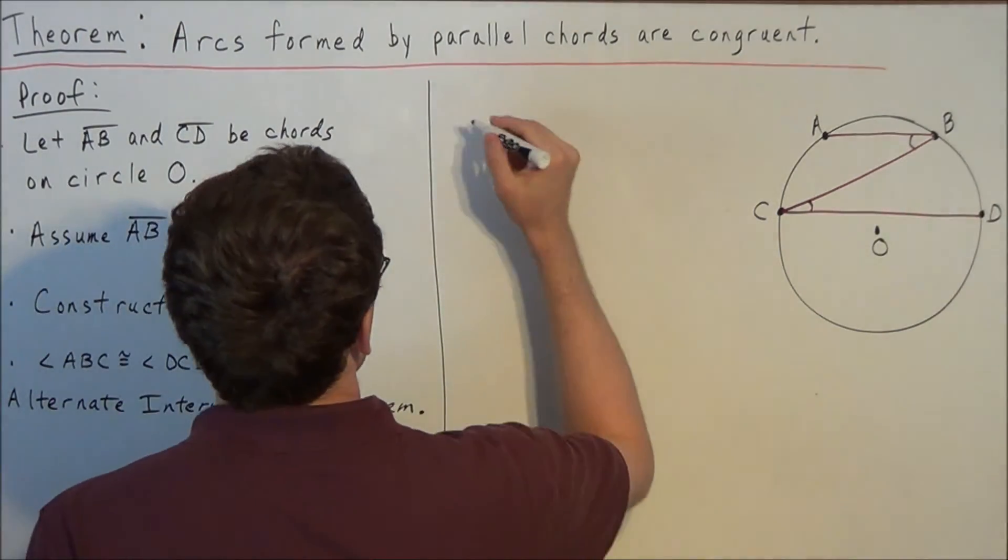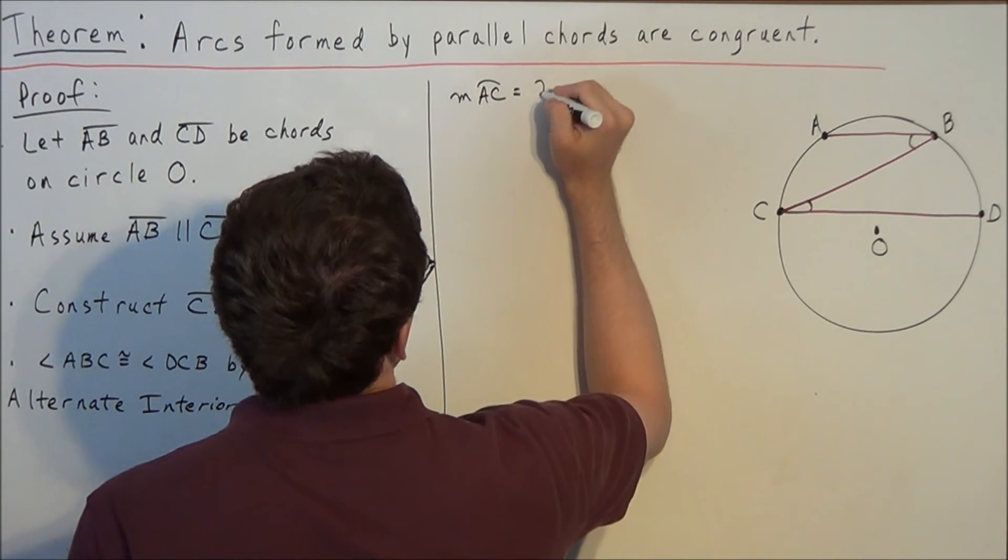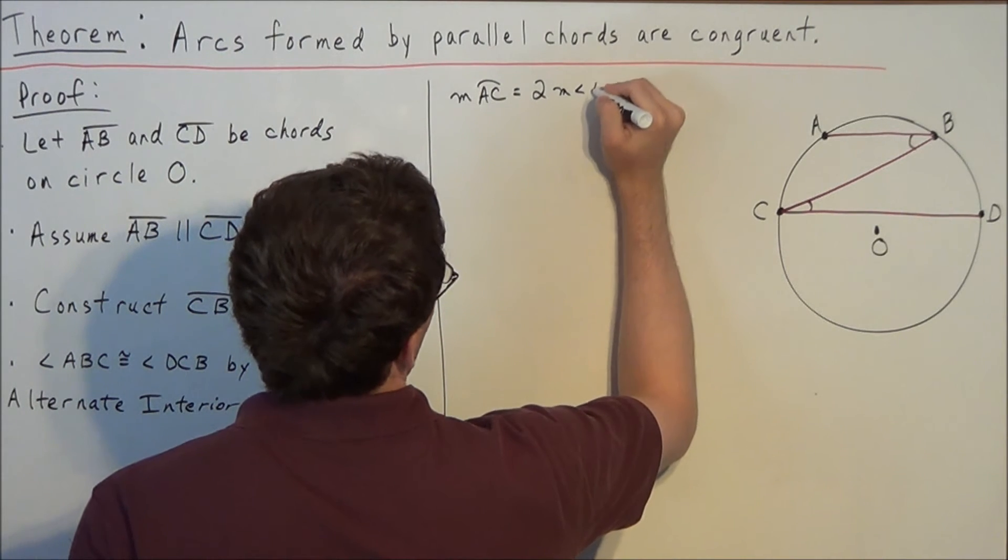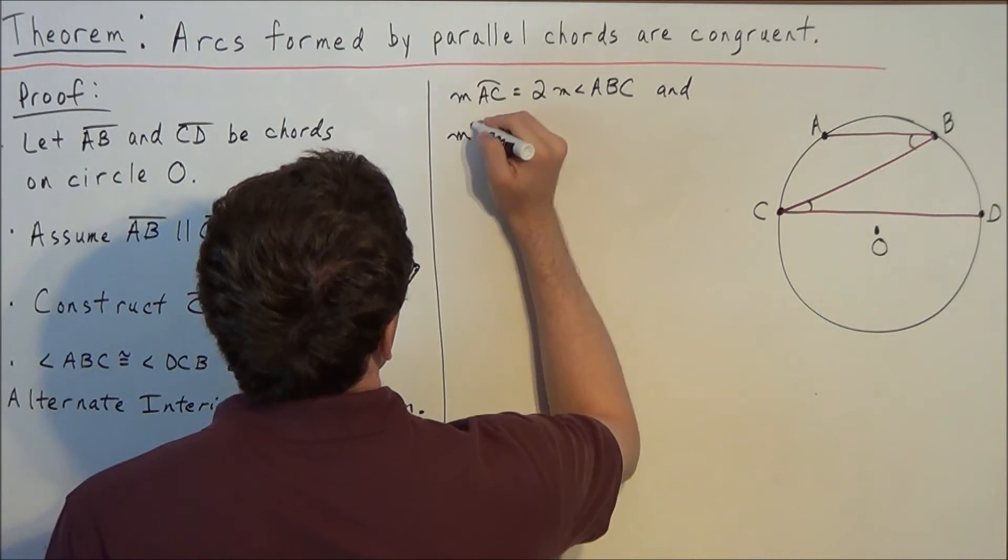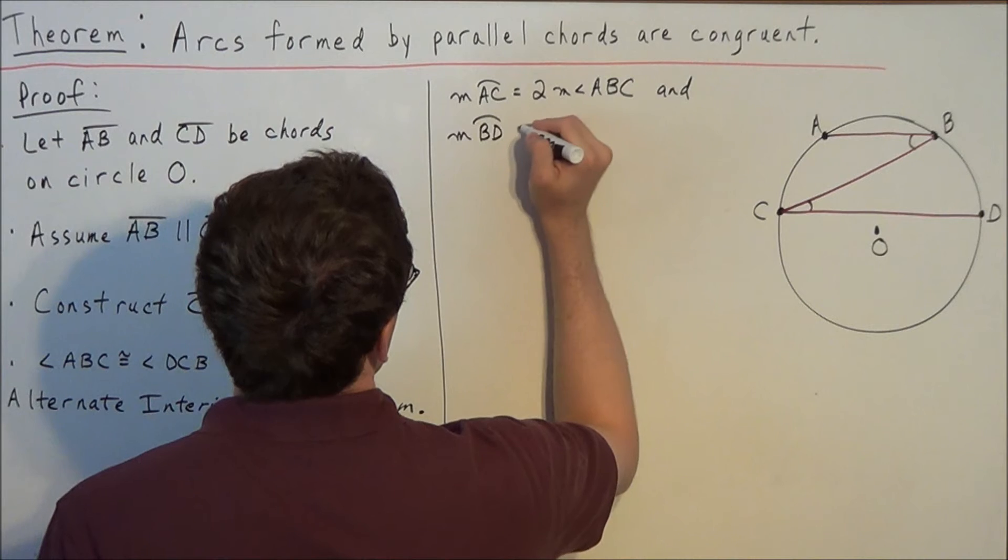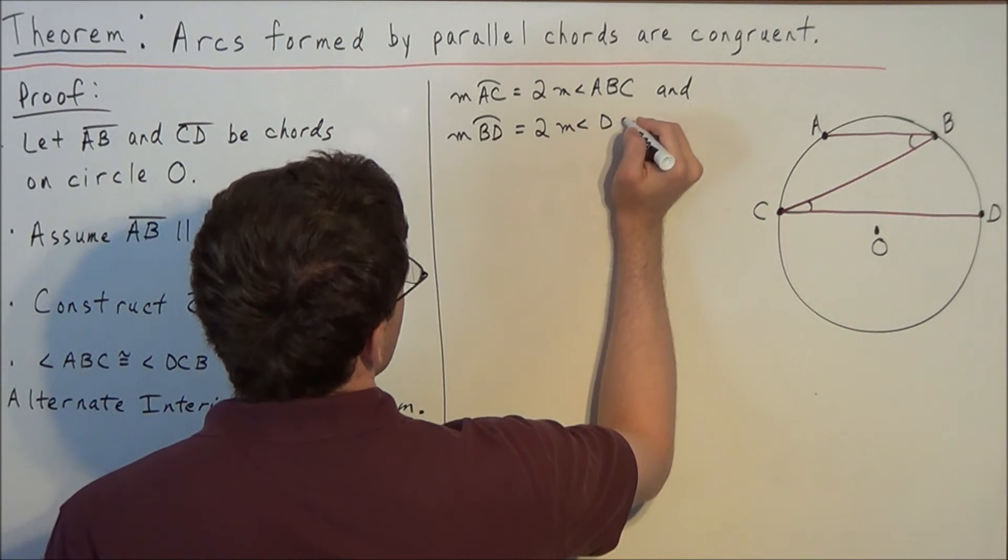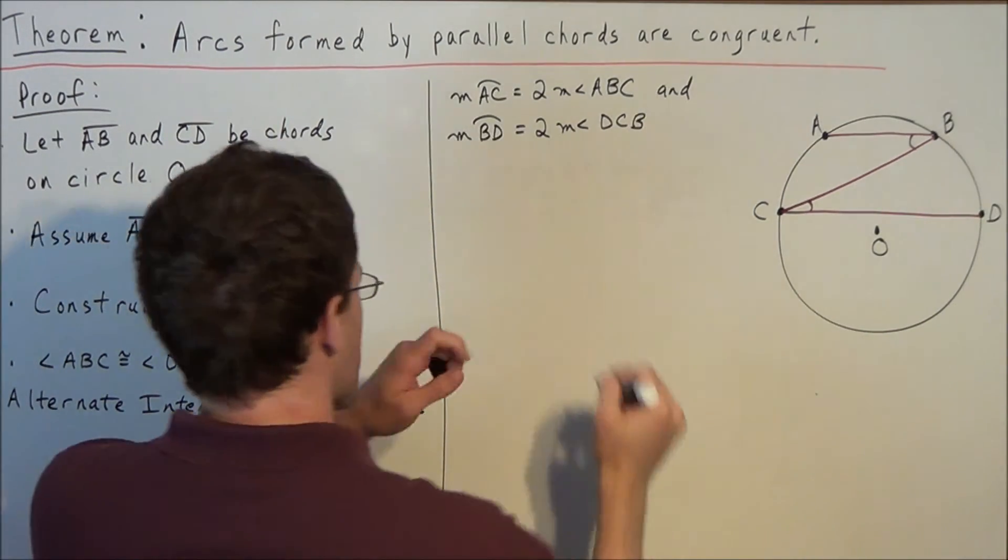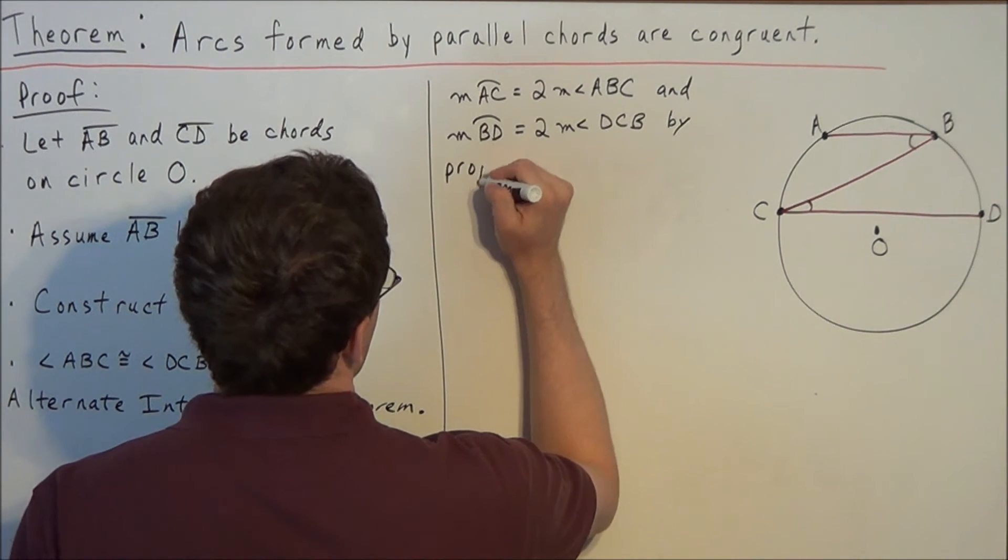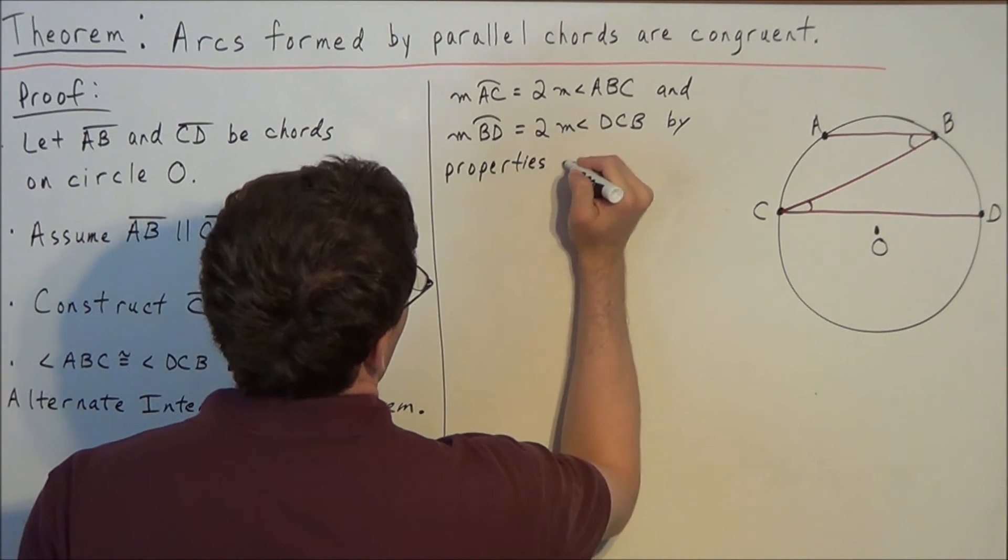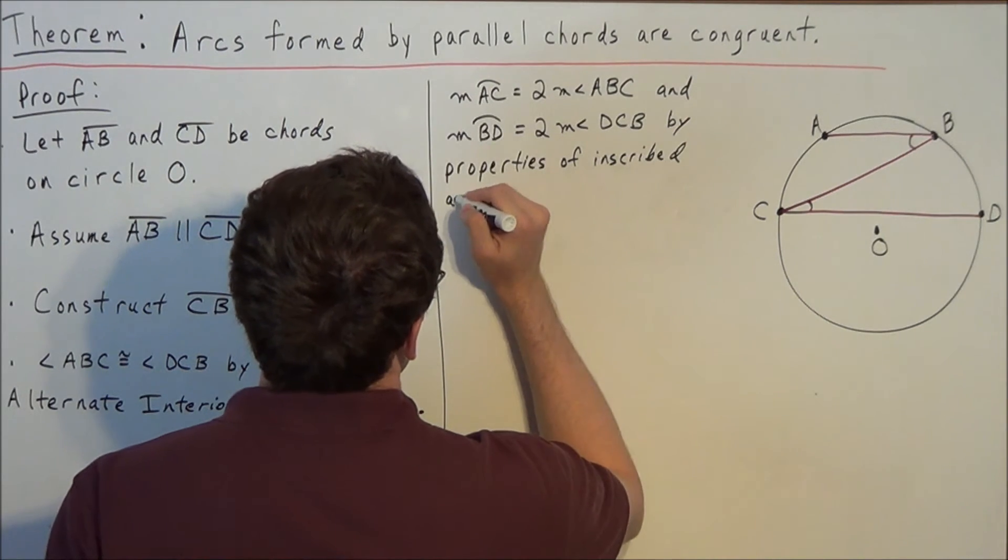And we could state that the measure of arc AC is equal to twice the measure of angle ABC, and the measure of arc BD is equal to twice the measure of angle DCB. And now this is true by properties of inscribed angles.